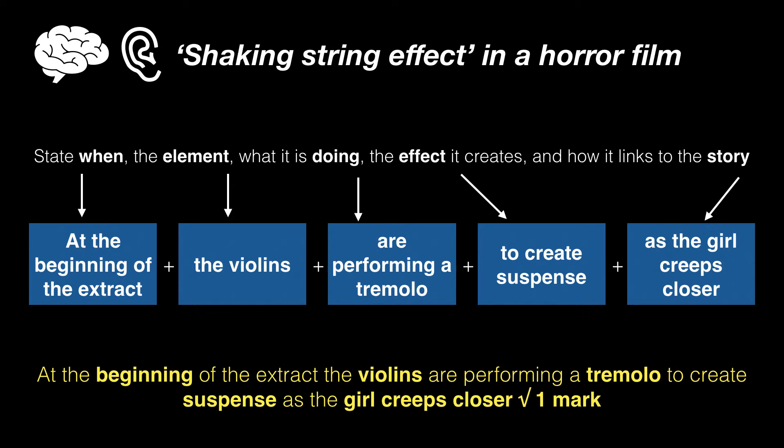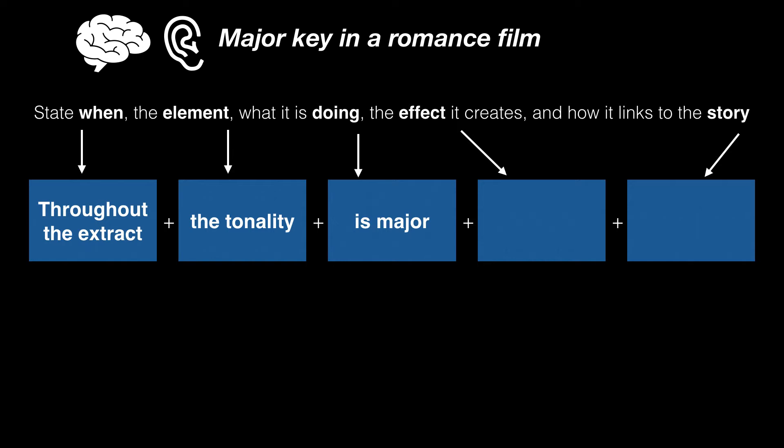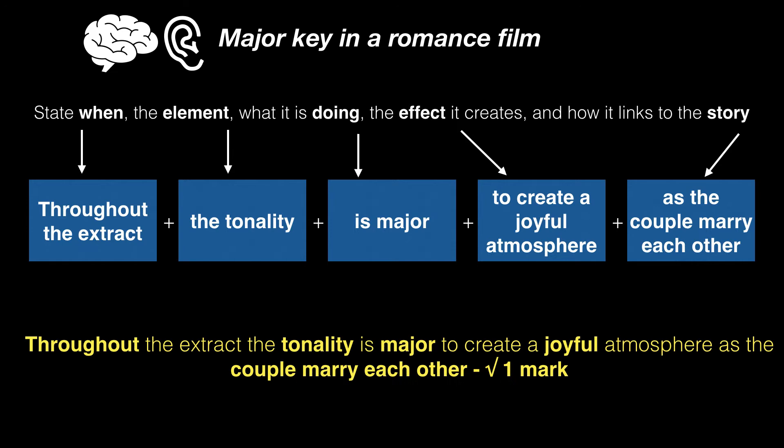Now we're thinking about a major key in a romance film. Throughout the extract, the tonality is major. What effect could that create? Well, a joyful atmosphere as the couple marry each other. And that's my sentence. You get the idea.